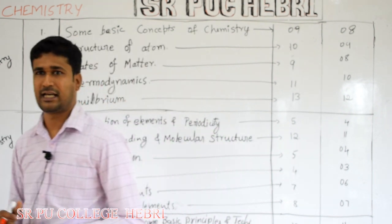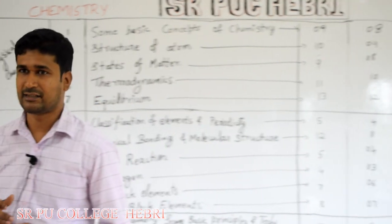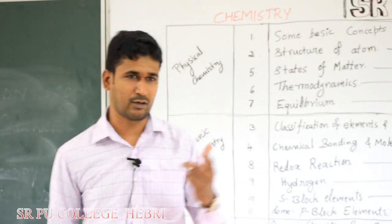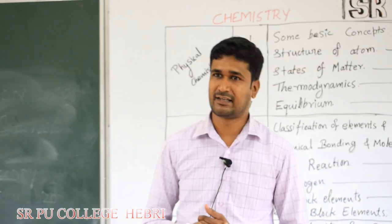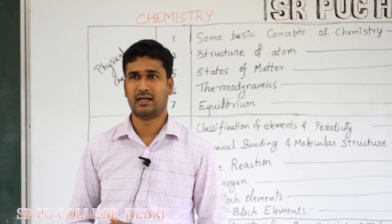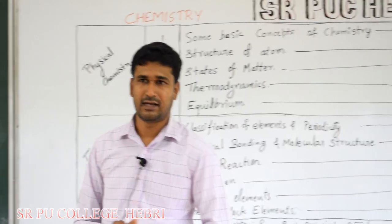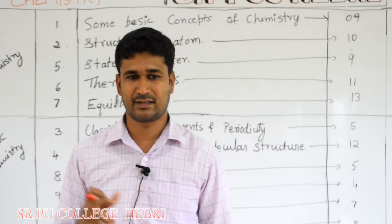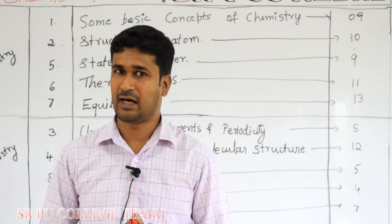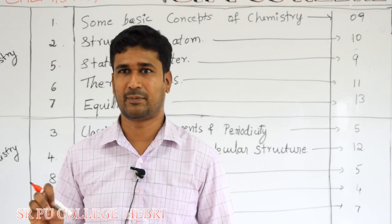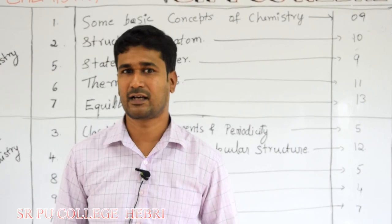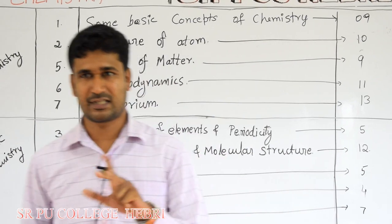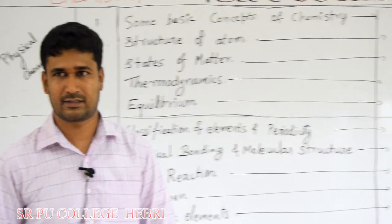In your lower classes — in 8th, 9th, or 10th standard — you studied science as a whole for 100 marks. But in your pre-university classes, you are separately studying physics, chemistry, and biology for 100 marks each. So now you are studying science for 300 marks and chemistry alone for 100 marks.